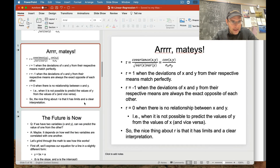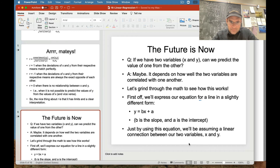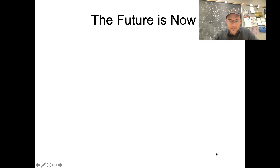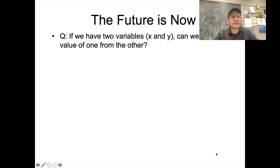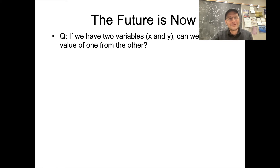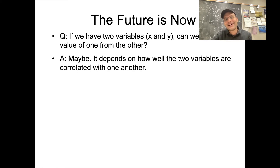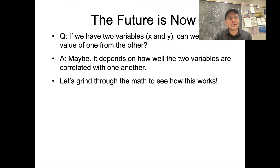So how do we do that? If we have two variables x and y, can we predict the value of one from the other? Maybe. It depends on how well the two variables are correlated — it depends on that r value. We need to know that to figure out how the whole thing works.